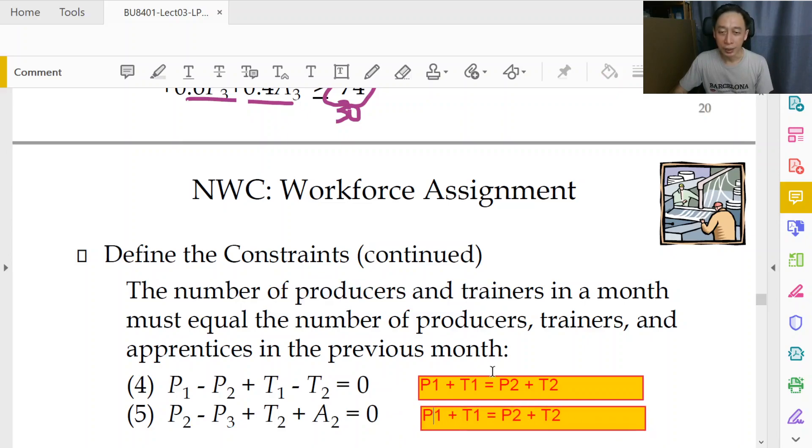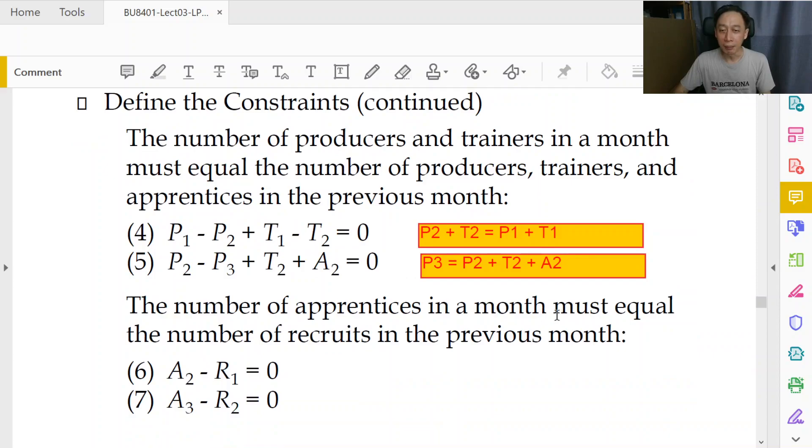So the ones get promoted—the P and T in the ones get promoted into twos. The P3 gets promotion from P2 plus T2 plus A2, because apprentices existing in the second month will get promoted to production workers in the third month. But apprentices could have been promoted to trainers, except in the third month we don't have trainers. So we are clear that we do not need P3 plus T3 here.